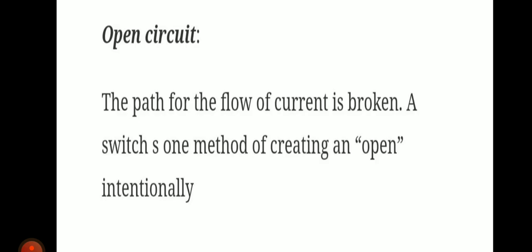Open circuit fault means the path of flow of current is broken. The circuit will not be completed because the path of flow of current will be broken in between. Suppose if you open the switch intentionally, then the circuit is opened. Or if you remove the safety device, or if there is some breakage in the conductor — that is, the flow path is broken and the circuit is not complete — then we call this an open circuit fault. In short, the path for the flow of current is broken.